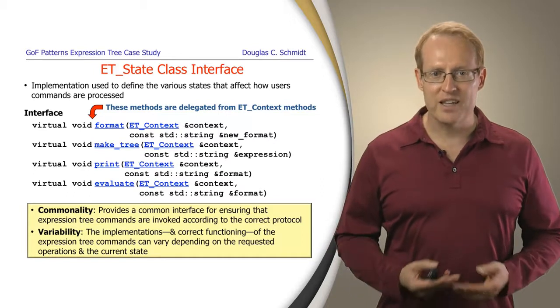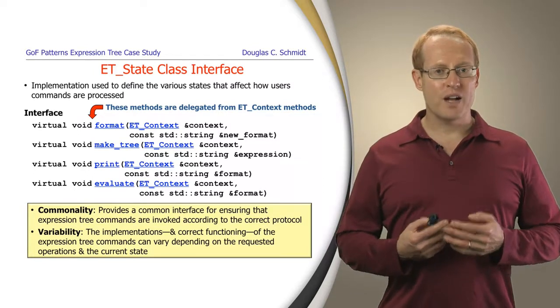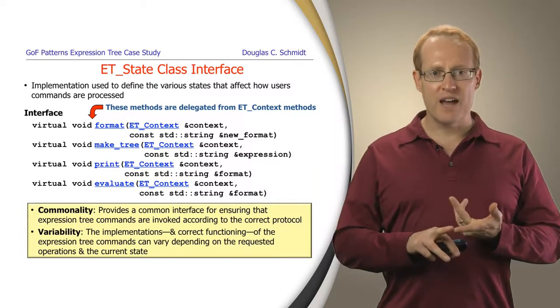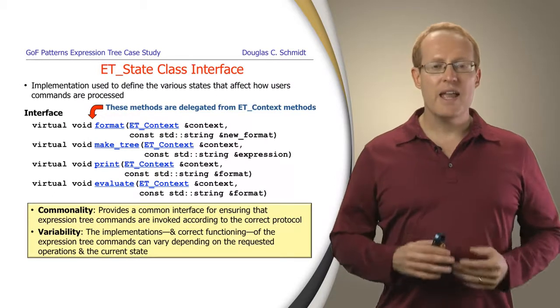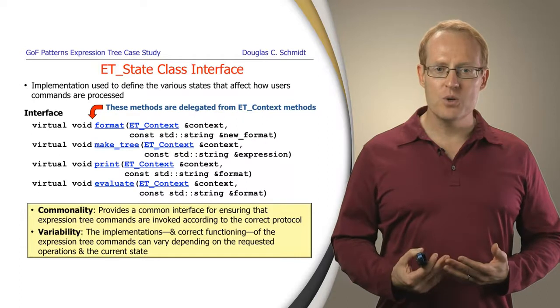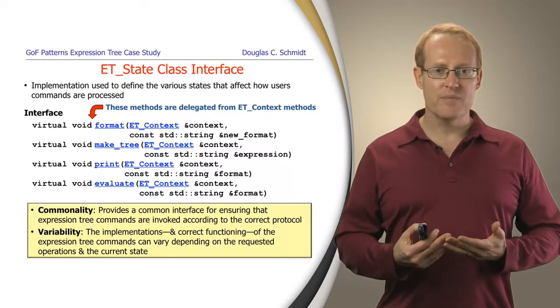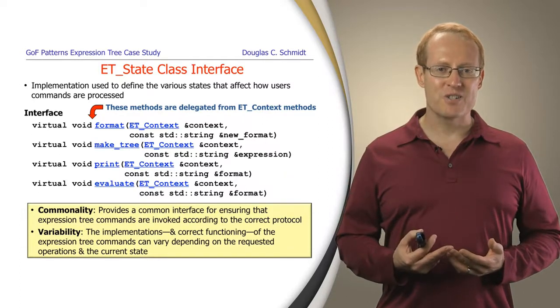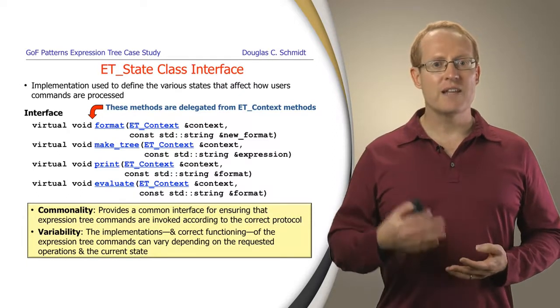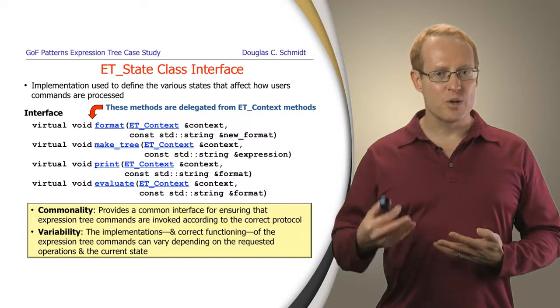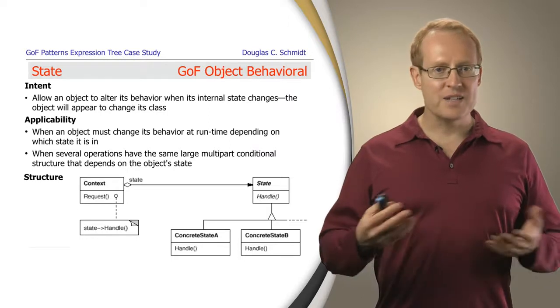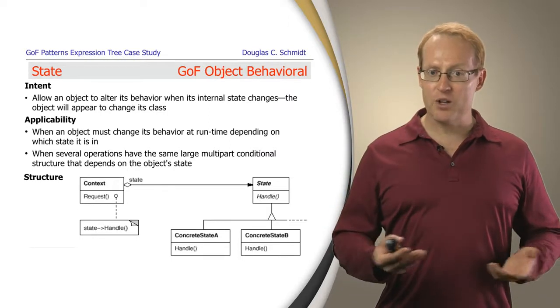And we'll see in just a bit how it works in a more concrete way. So, again, from a commonality and variability point of view, we have a common interface, things like format, make tree, print, evaluate, and so on. And those are fixed. They're common. And then we're going to be able to vary the behavior of what those operations do based on the state that we happen to be in. And naturally, the secret sauce here is going to be by subclassing from the ET state class and then filling in different behaviors for those different virtual methods in different ways.